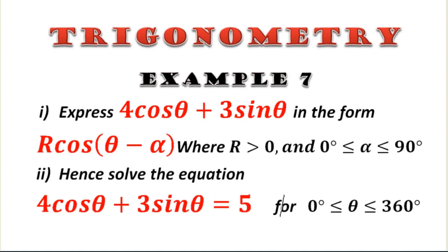Example number 7. Express 4 cos theta plus 3 sin theta in the form R cos(theta minus alpha), where R is greater than 0 and alpha is between 0 and 90 degrees. Hence solve the equation 4 cos theta plus 3 sin theta equals 5 for theta between 0 and 360 degrees inclusive.